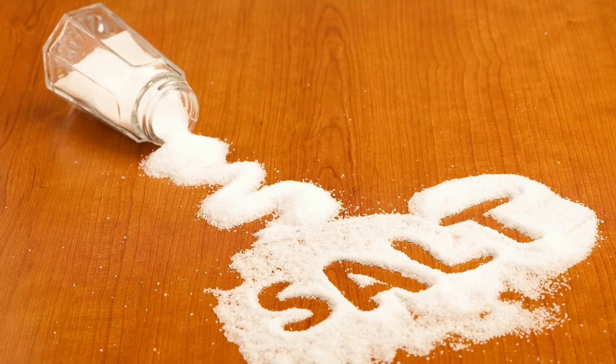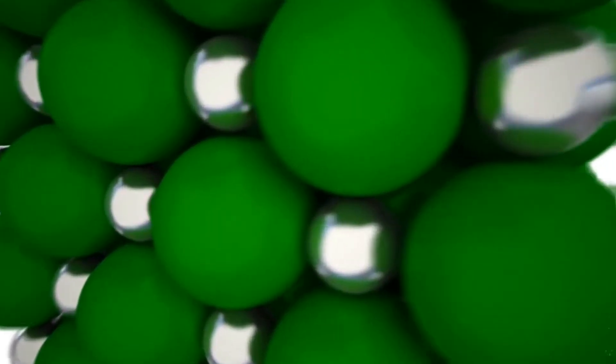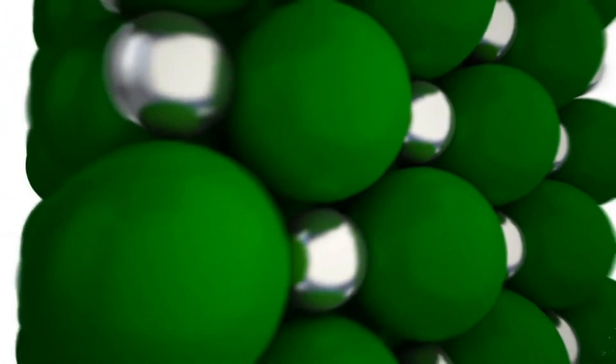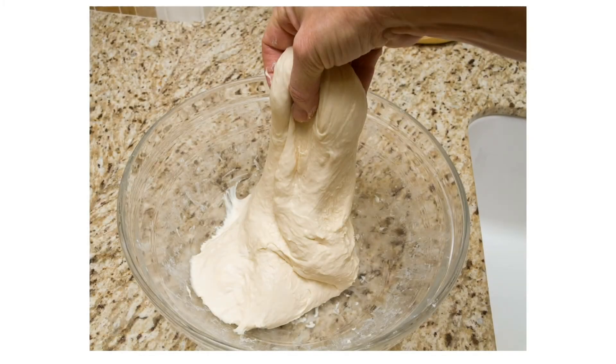Lastly, salt is added to the dough and not just as a matter of taste. The presence of sodium and chloride ions is essential for the convergence of protein chains, contributing to the formation of a stronger and more elastic dough.